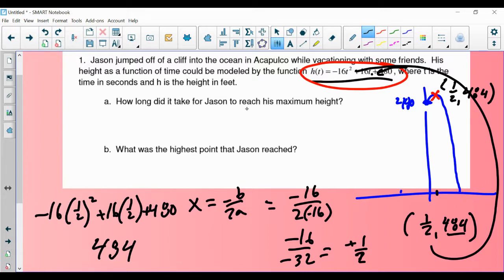How long did it take for Jason to reach his maximum height? Well, it took him one half of a second. We'll call it a half a second. Does it make sense? Hopefully. At a half a second, we're up at 484 feet. That's how long it took Jason to reach his maximum height. And what was that highest point that he achieved? 484 feet.